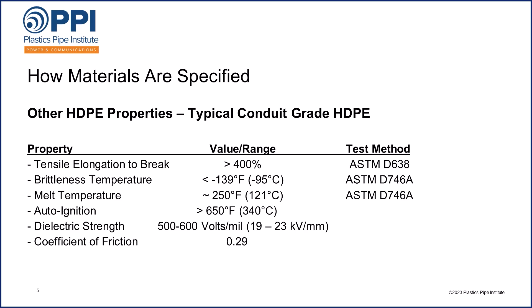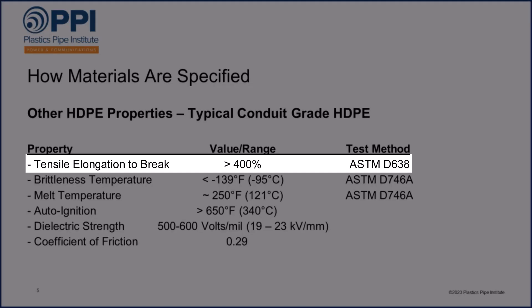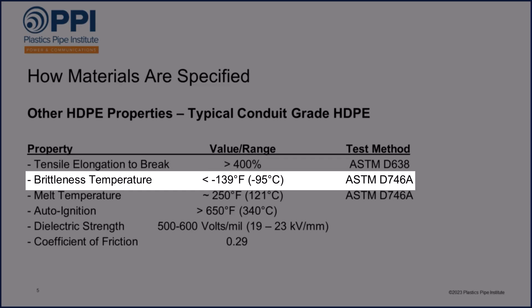There are also other properties which are not part of the cell classification but which are still interesting to know for Conduit applications. For instance, when it comes to the typical elongation at break, the minimum requirement is for over 400% elongation. If you tried to stretch HDPE Conduit, it would elongate at least 400% before it would break.